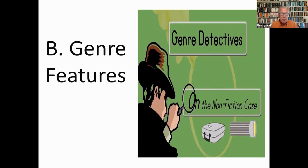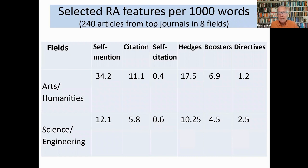Rhetorical choices also vary across disciplines because they express different epistemological and social practices. Students learn their disciplines as they learn its discourses. I'm going to refer to hard and soft fields to show some of the ways that language choices are related to disciplinary understandings. This table shows a few of these differences based on an analysis of 240 research articles of around 1.5 million words from the 10 leading journals in eight disciplines.